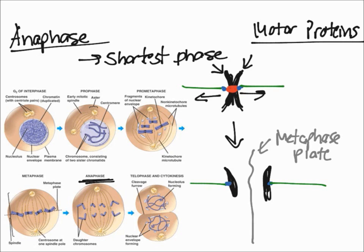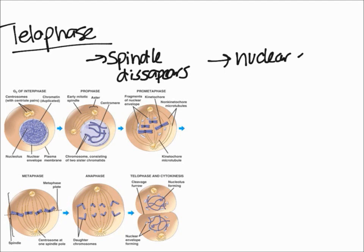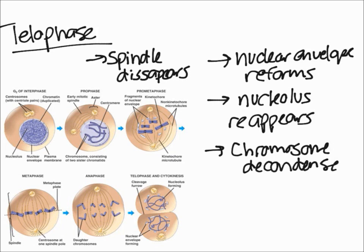The last phase is telophase. What happens in telophase is that the spindle disappears and the nuclear envelope reforms in each of the new cells. The nucleolus reappears, and chromosomes decondense